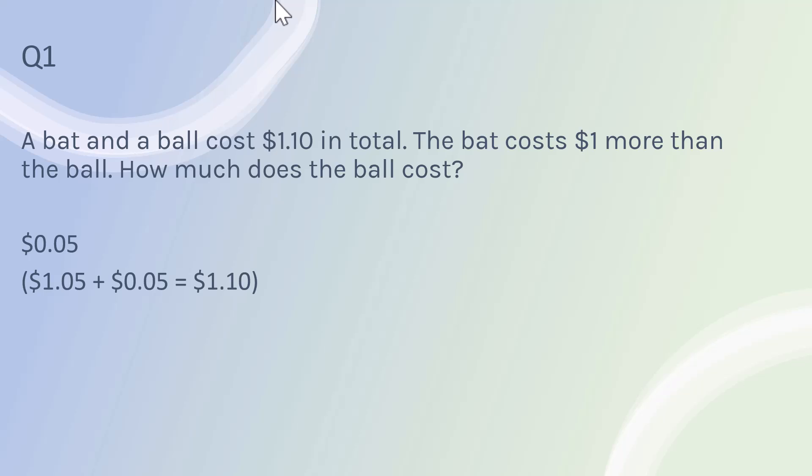The answer is in fact $0.05. With a bit of quick mental arithmetic, $0.05 for the ball and $1.05 for the bat gives us the $1.10 total. So it's really important that we keep in mind what numbers are given to us.